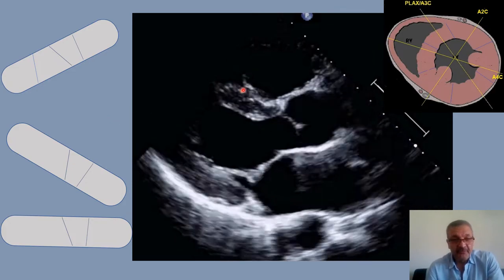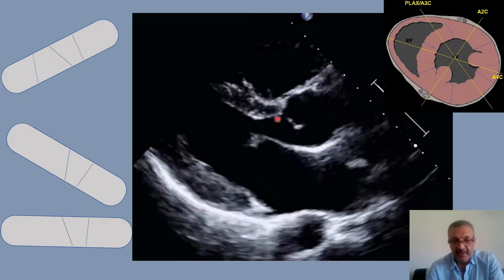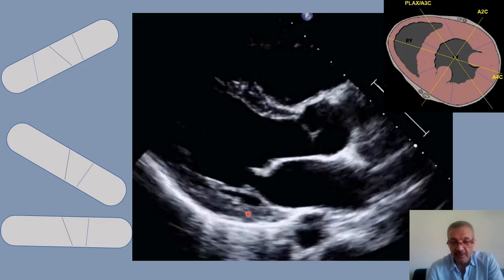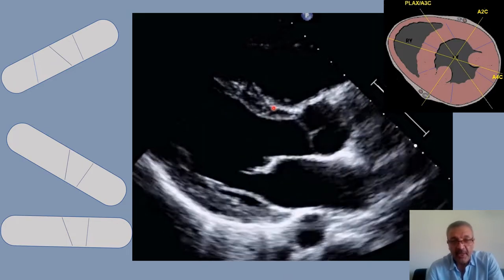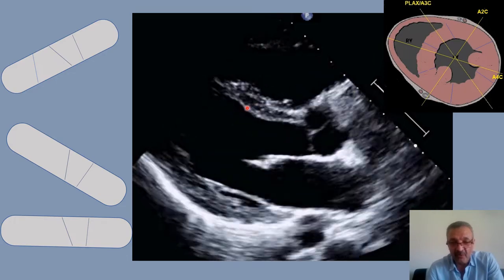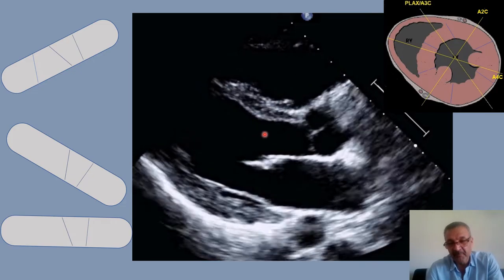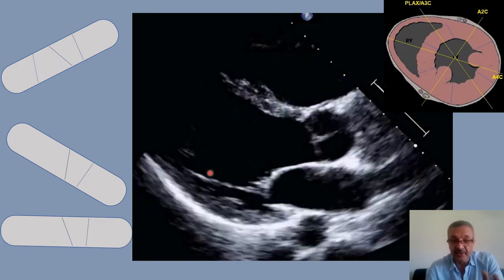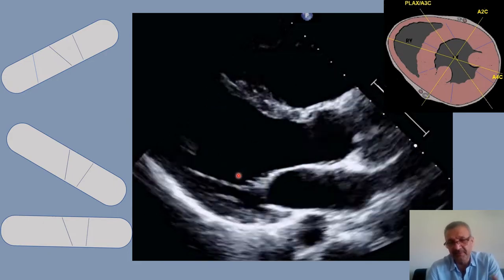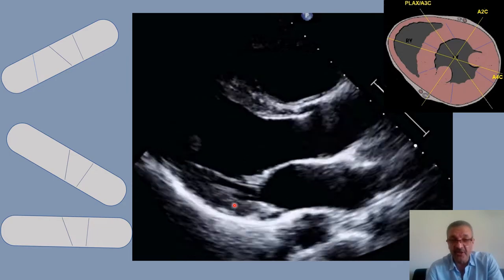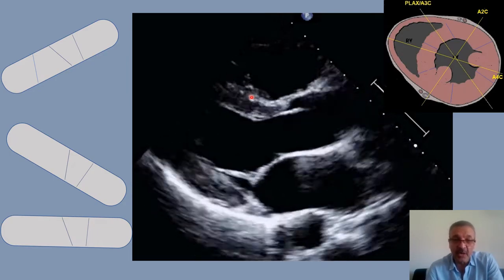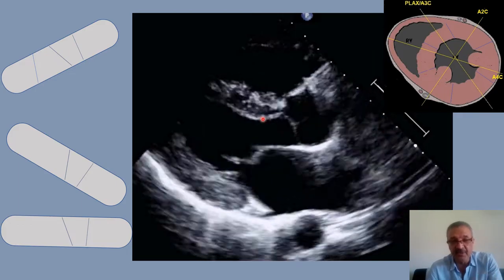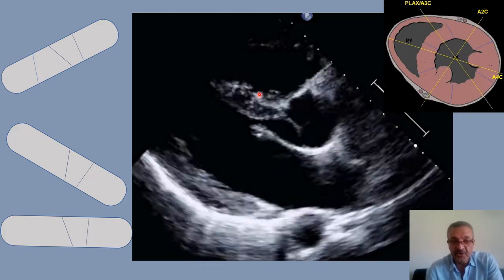Another tip: in normal people, the septal wall thickness is almost the same as the posterior wall — it's symmetric. So when measuring, always check your numbers. If they are not the same, ask yourself if you're measuring correctly. Sometimes we have localized hypertrophy, but this is rare. It could be a mass, infarction, or a segment that is thin or thickened. Verify by checking other views, such as apical or PSAX.